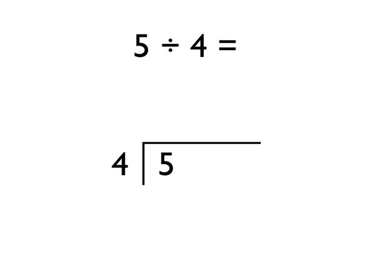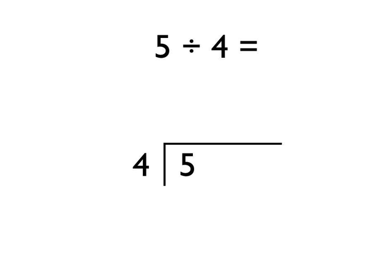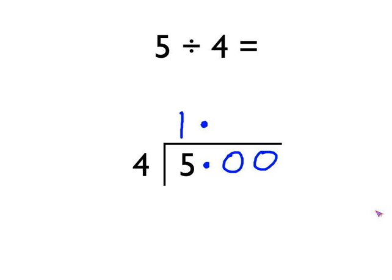Now I want to show you how you can use short division when you're going to get a decimal number as your answer. So 5 divided by 4 gives a decimal answer. The first thing I advise is to put in a decimal point and then add some zeros to the right-hand side of it. Then make sure we have a decimal point up here in our answer, ready for the answer. We proceed exactly as before. How many times does 4 go into 5? Well, 4 goes into 5 once with 1 remainder. Notice how that 1 remainder goes here to make this number into 10.